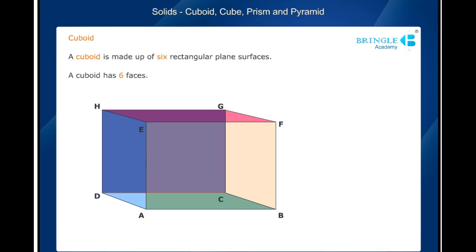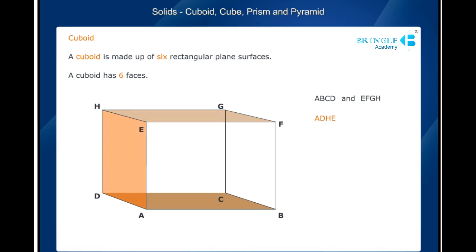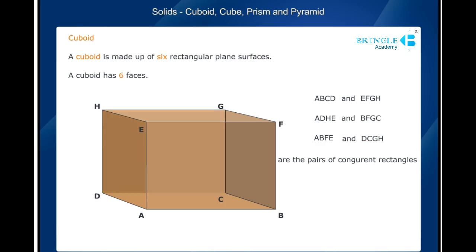Thus, a cuboid has six faces. ABCD and EFGH, ADHE and BFGC, and ABFE and DCGH are the pairs of congruent rectangles. These rectangles are equal in all respects. These congruent faces lie in parallel planes.